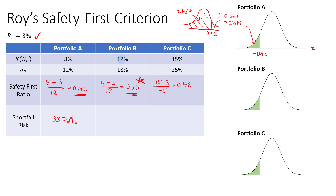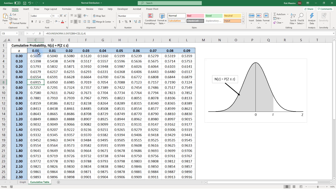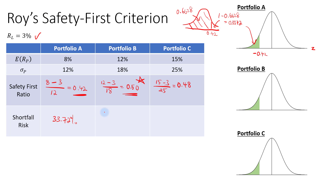For Portfolio B, we look up Z equals 0.5, giving a cumulative probability of 0.6915. The shortfall risk is 1 minus 0.6915, which equals 0.3085, or 30.85%.